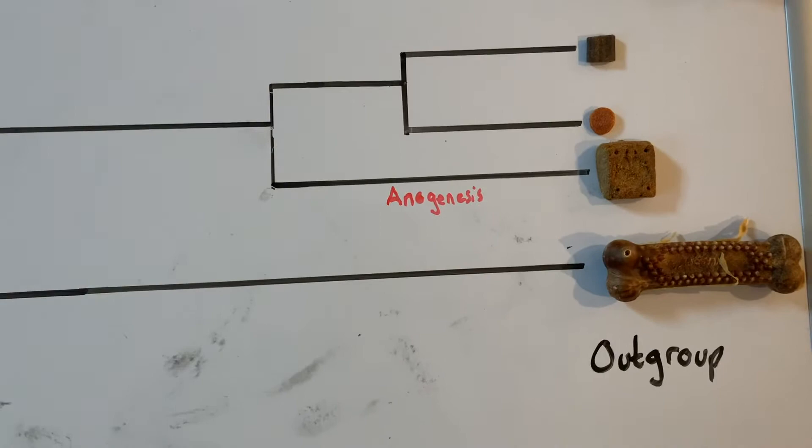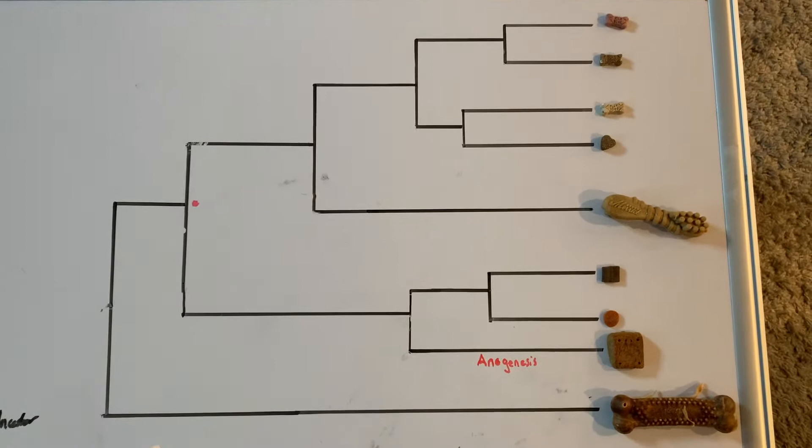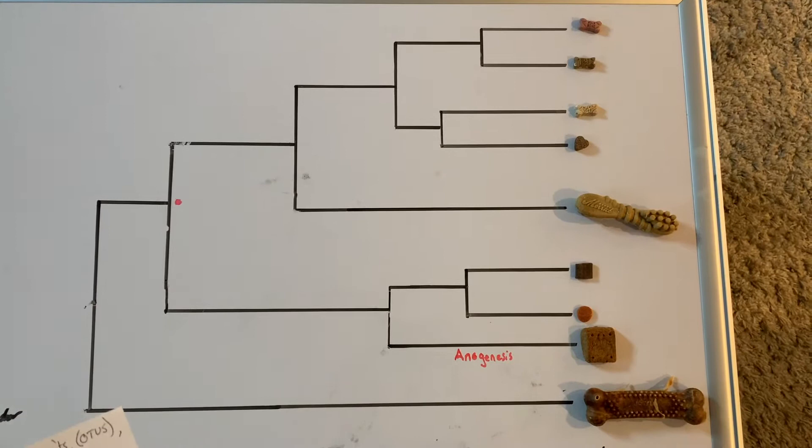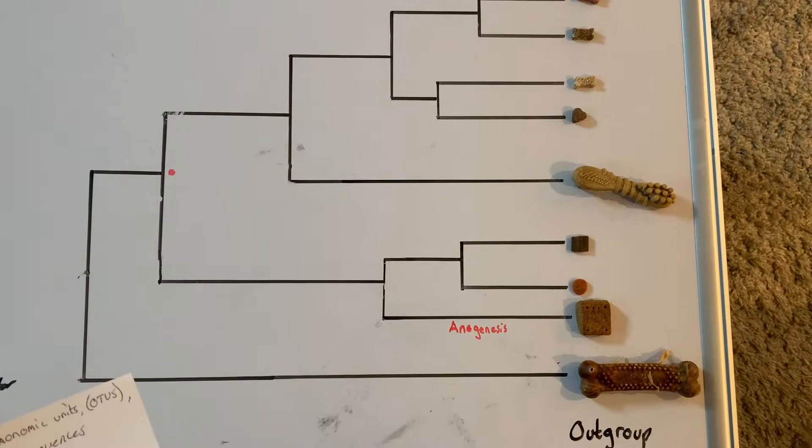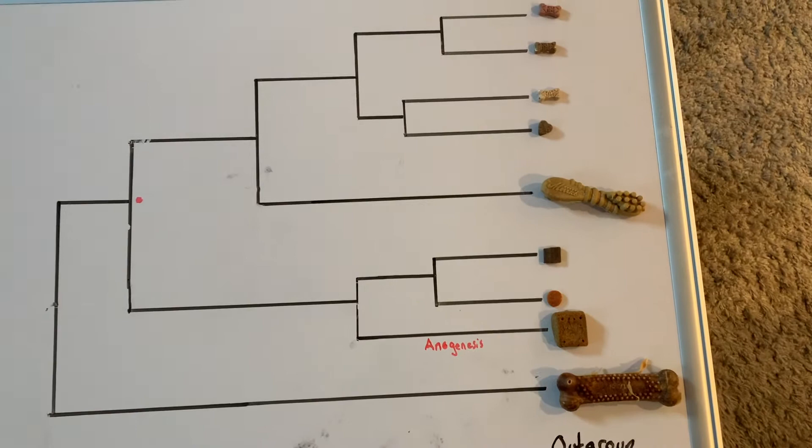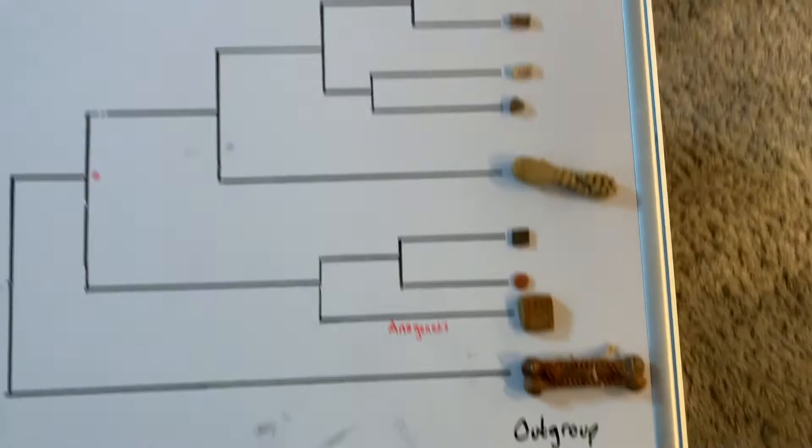So a little bit about this. This is a rooted tree, so the distance between operational taxonomic units, or OTUs, which are based on differences in DNA sequences. Our outgroup is a known OTU that diverged earlier than all the others, which is what roots our tree. You can see all the way down here to our outgroup.